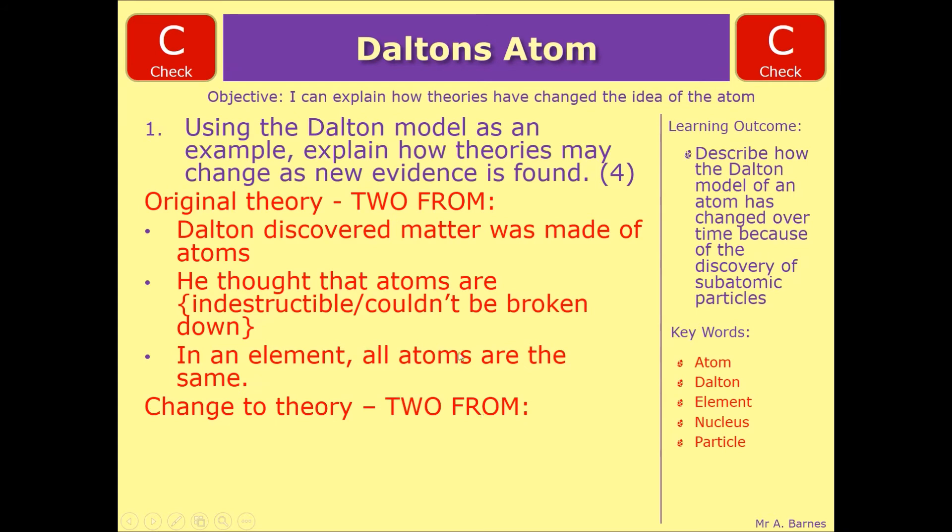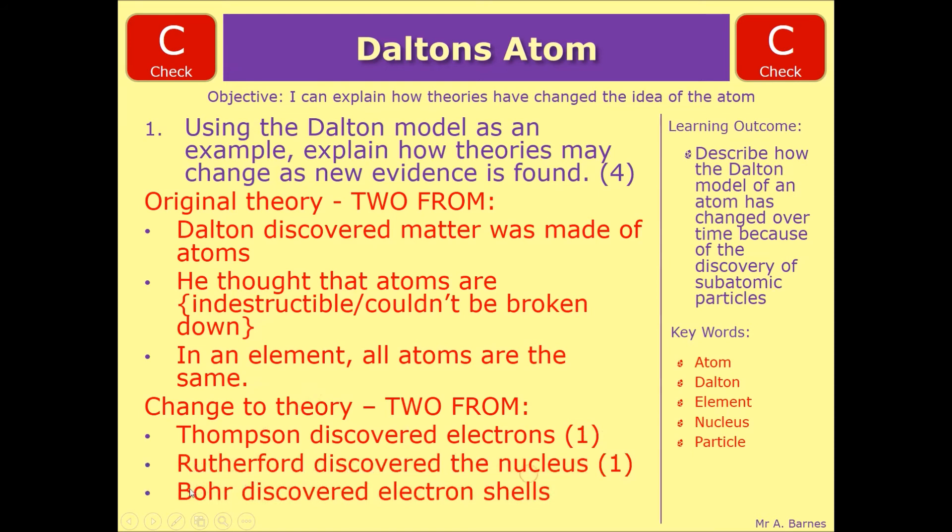Then the change to the theory, you needed two marks from: Thompson discovered electrons, Rutherford discovered the nucleus, and then Bohr discovered electron shells. If you got two from each of those sections, you got four marks.